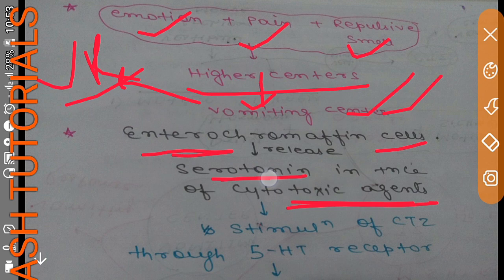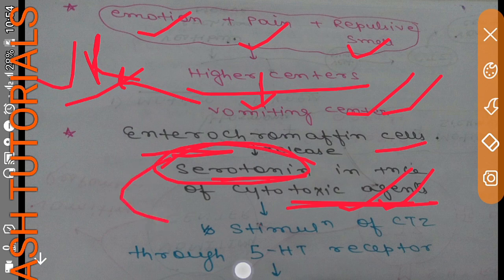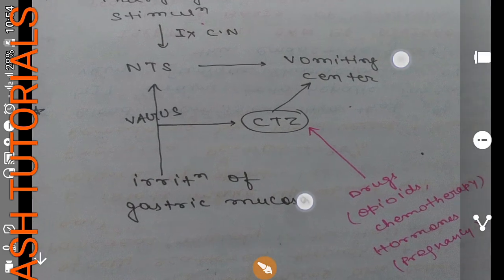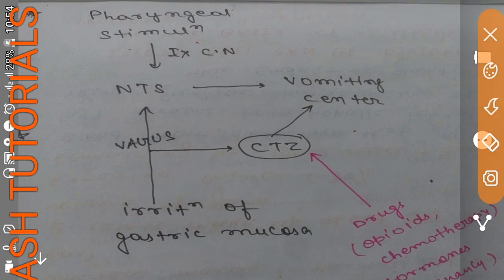Enterochromaffin cells release serotonin in the presence of a cytotoxic agent. This serotonin binds to the 5-HT receptors of the chemoreceptor trigger zone, as shown previously. Once serotonin binds to the 5-HT receptor of the CTZ, the CTZ is activated and passes the stimulus to both the NTS and the vomiting center, causing the vomiting response.